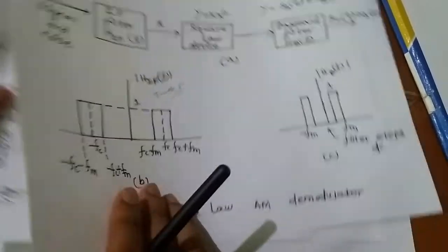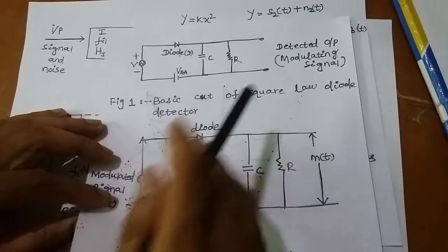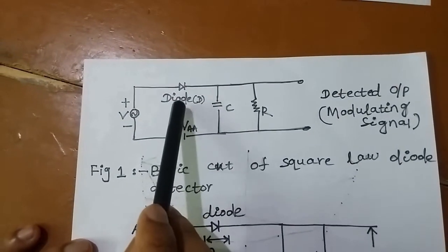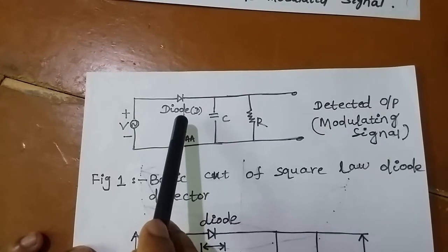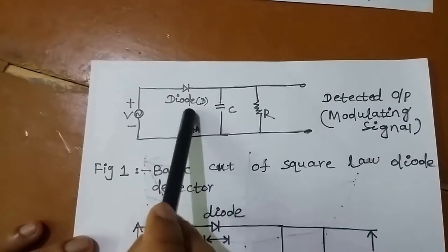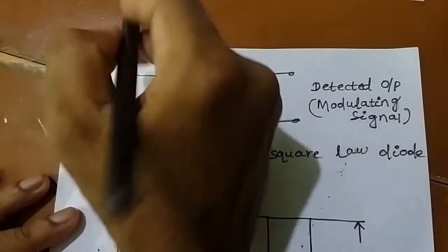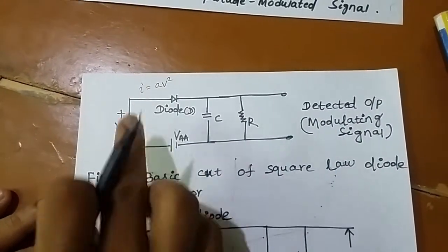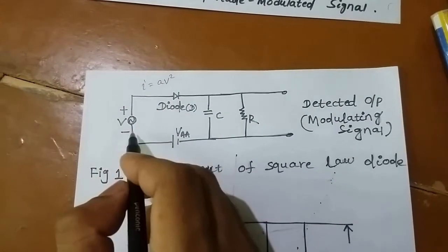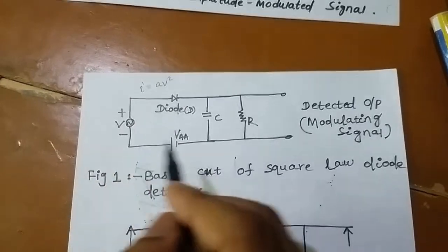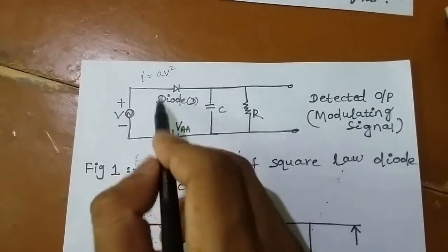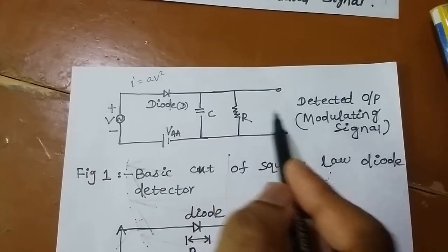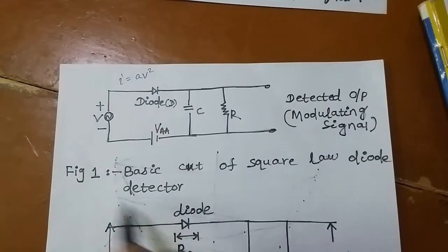This is the circuit diagram for the square law detector. The diode is a nonlinear device where the current equals a constant times the voltage squared — i = a·V². Using this nonlinear property, when the modulated signal is given, you calculate i = a·b·b² and then pass it through a low pass filter to get the modulating signal.